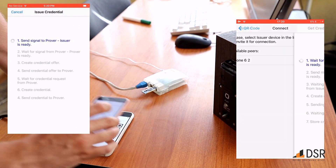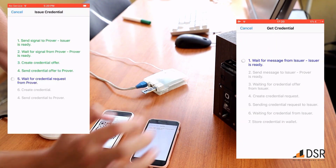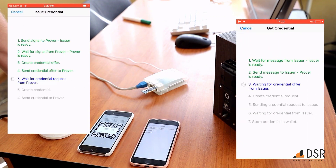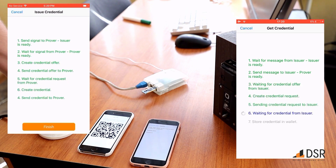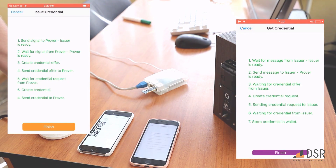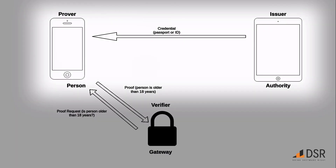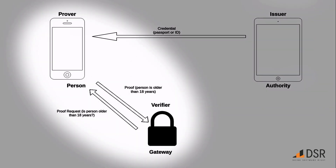Then, in order to gain access to something — in this case our hotel minibar — the prover connects to the gateway or verifier via a public key. The gateway then requests a proof from the prover, who sends back a zero-knowledge proof. For instance, the proof verifies that the person is old enough to access the minibar, but does not tell you their age.